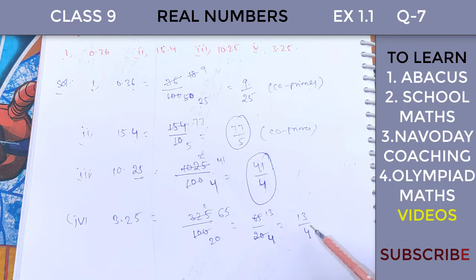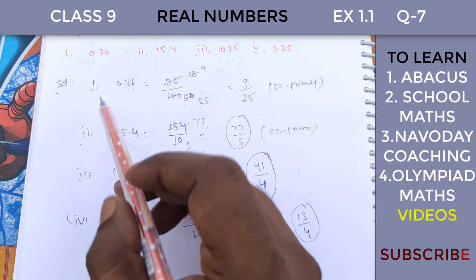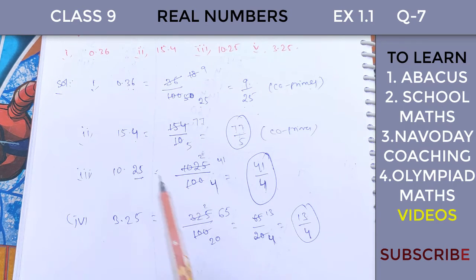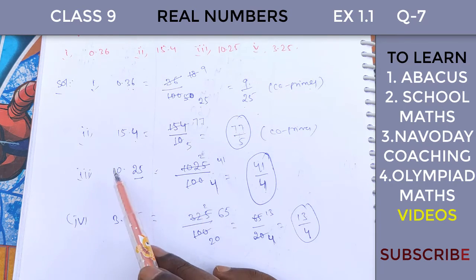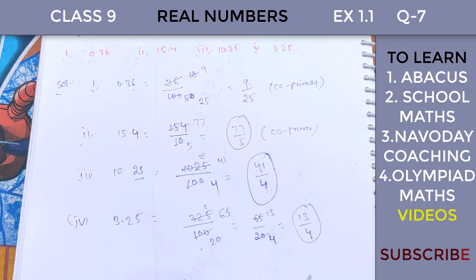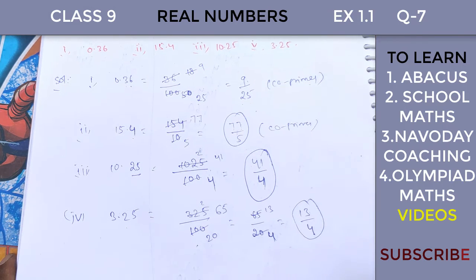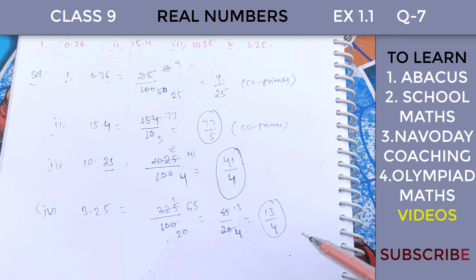This is the rational number form. These decimal numbers can all be expressed as rational numbers. This decimal concept is important. OK students, next video we'll continue Exercise 1.1. Thank you.